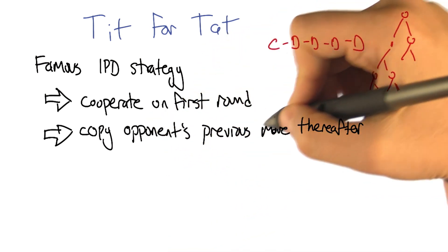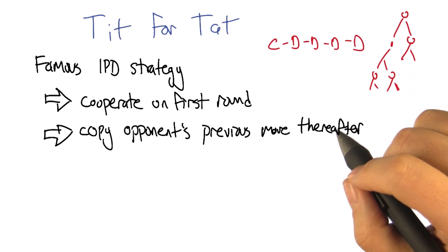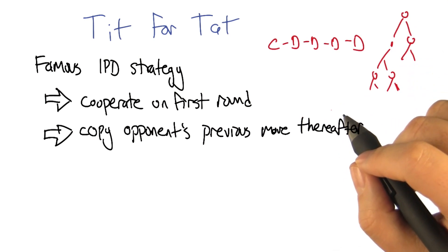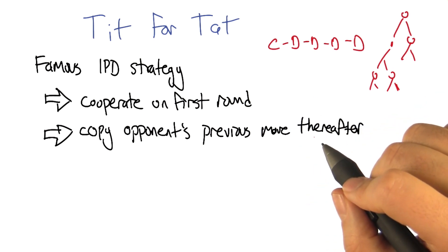Well no, not exactly. What this says is it actually copies the opponent's previous move. So if an opponent goes cooperate, defect, cooperate, defect, cooperate, defect, defect, defect, cooperate, cooperate, cooperate, you're going to see something very similar coming out of the tit for tat agent.